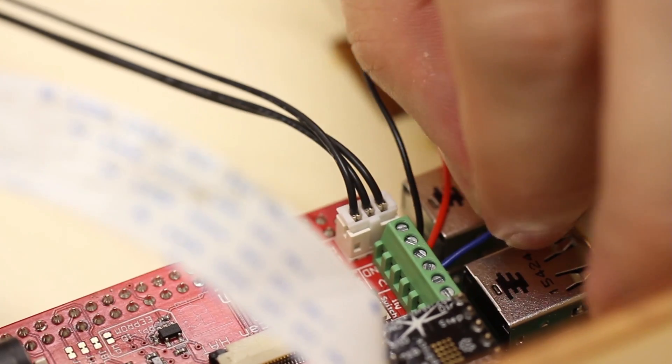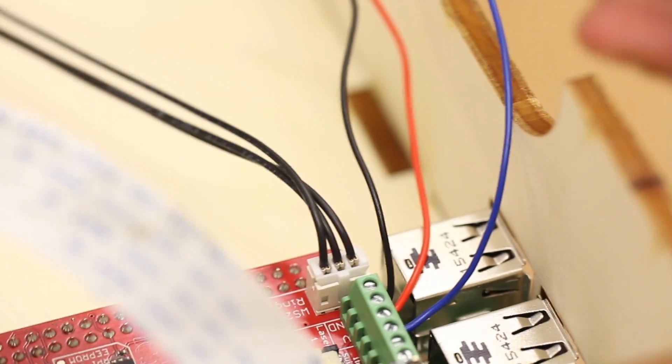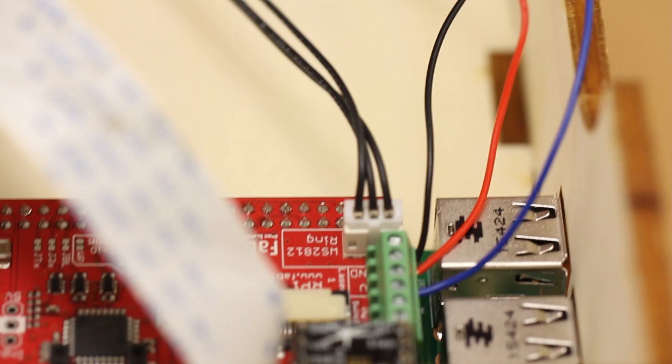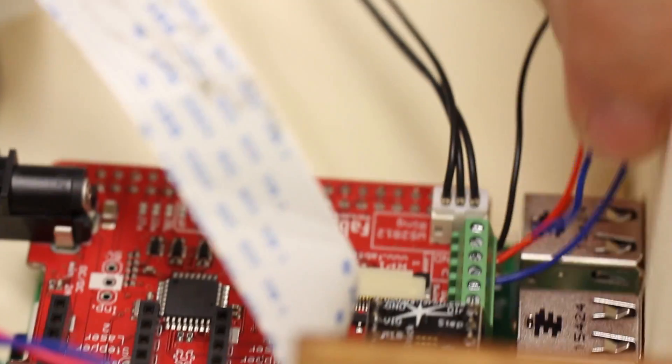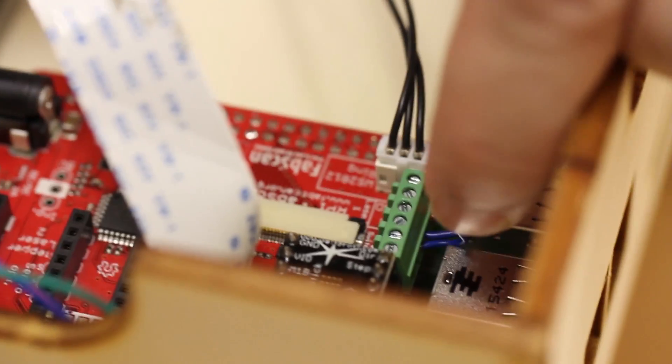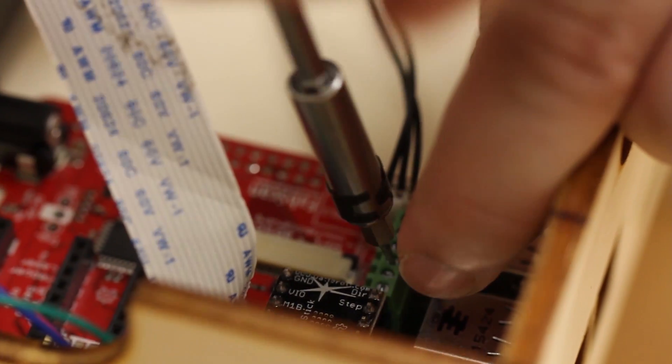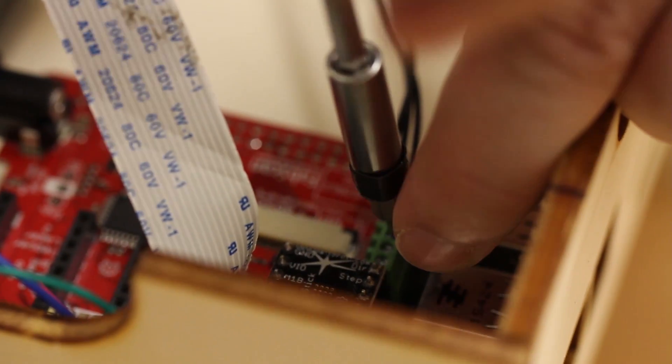So again you can see here the black wire, the red wire and now comes the switch. You have two cables for the switch so both of them have to be inserted and screwed in.